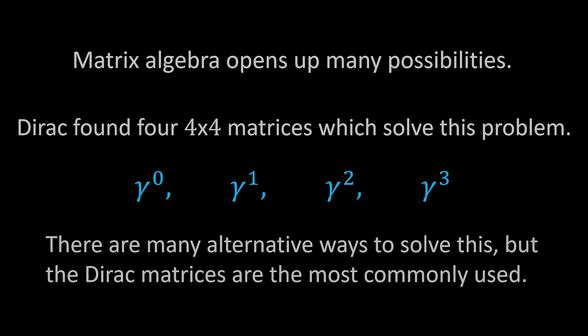But think about what this means for ψ. It can't just be a complex-valued wave function anymore, because you have to be able to multiply it by a 4×4 matrix. Therefore ψ has to be a four-component vector. As it turns out, ψ is what's called a bispinor.